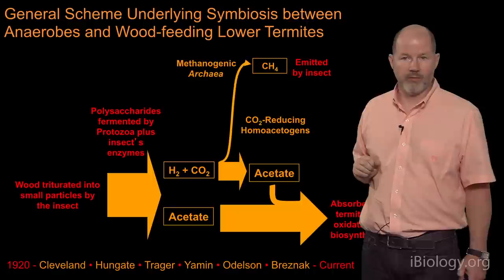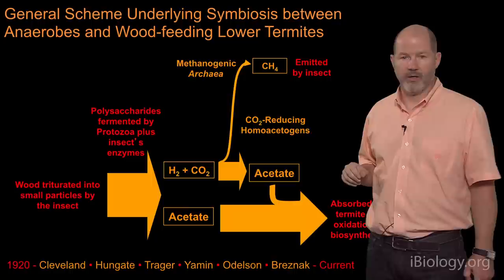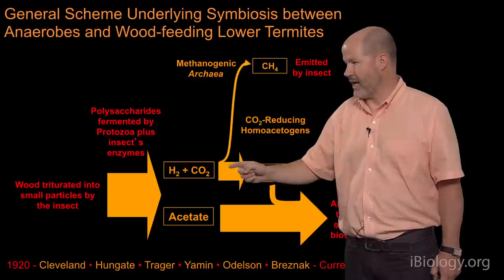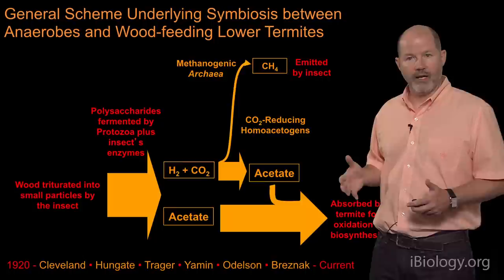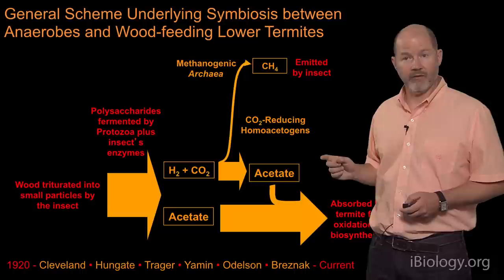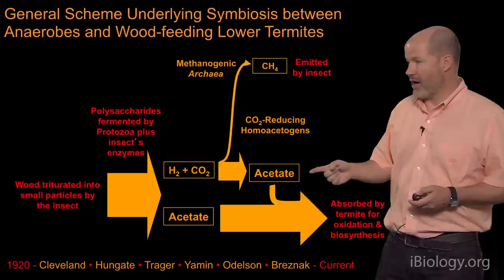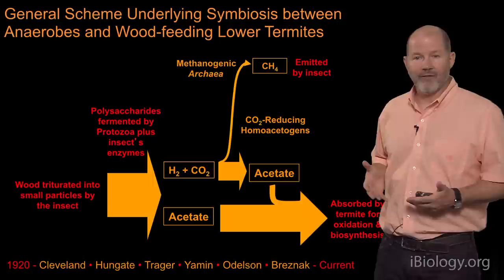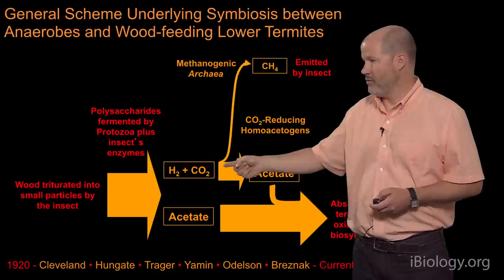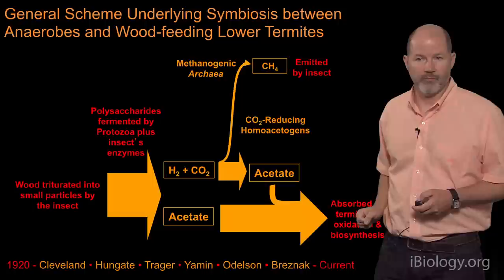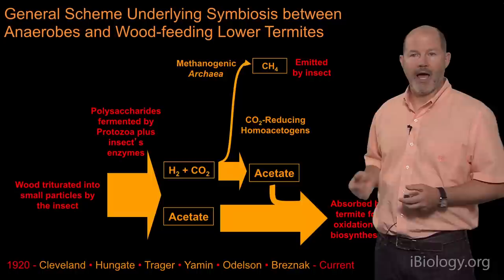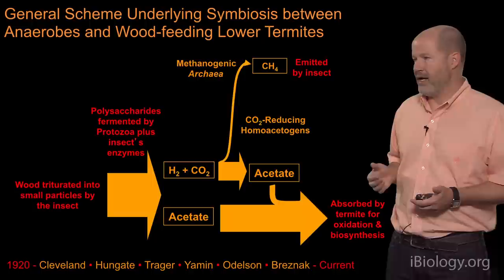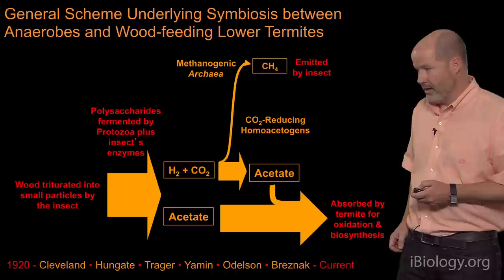On a global scale, the methane emission by termites would be much more significant if this hydrogen/CO2 was not being consumed by a different group of organisms we call CO2-reducing homoacetogens. Many termites contain microbes that push these methane organisms out of the picture — or 90% of them. Those microbes convert hydrogen and CO2 into acetate, which goes into the gut pool and is absorbed by the insect. So up to a third to a fifth of the acetate used as biofuel by these insects is derived from carbon dioxide and hydrogen.